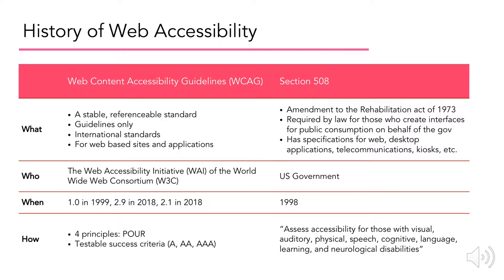The way each of these organizations has established criteria is a little bit different. For WCAG, they have established four principles called POUR, which stands for Perceivable, Operable, Understandable, and Robust. They also have very objective testing criteria for A, AA, and AAA, with AAA being the most accessible and single A being the least. With Section 508, however, the definition of accessible is pretty subjective. There are companies whose job it is to audit sites to make sure they are meeting Section 508, and this is how companies either pass or fail.